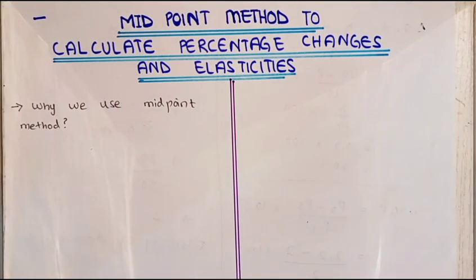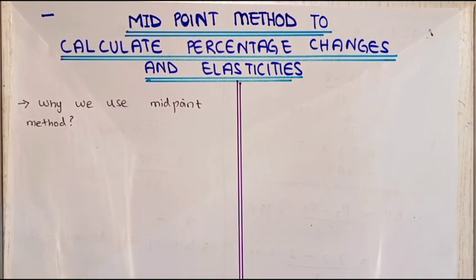In the previous video we discussed how to calculate percentage changes in prices and quantity demanded by dividing the percentage change in quantity demanded by the percentage change in price. Now the question arises: why do we use the midpoint method? I will try to give this answer with the help of a graph.